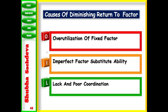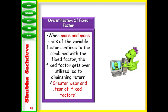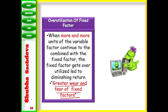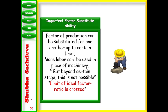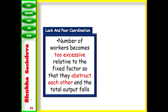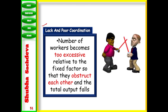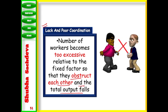Now reasons for diminishing returns. First, over-utilization of the fixed factor — when the fixed factor is excessively utilized, there is greater wear and tear and wastage begins. Second, imperfect factor substitutability — machines and labor are not substitutes for each other; you cannot replace one with the other. Third, poor coordination — as the number of workers increases excessively, they distract each other, coordination suffers, wastage increases, and output falls.